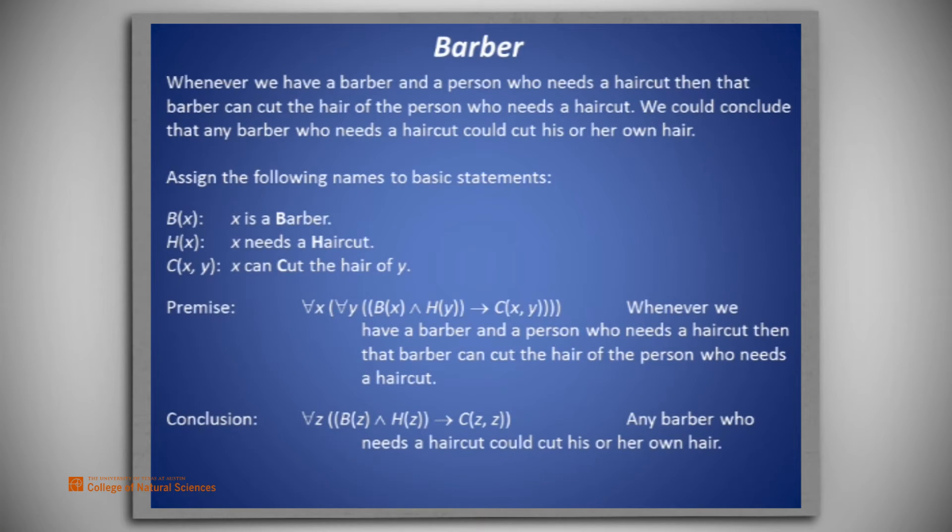The conclusion we seek is for all Z, if B of Z and H of Z, then C of Z and Z. That is, any barber who needs a haircut could cut his or her own hair.